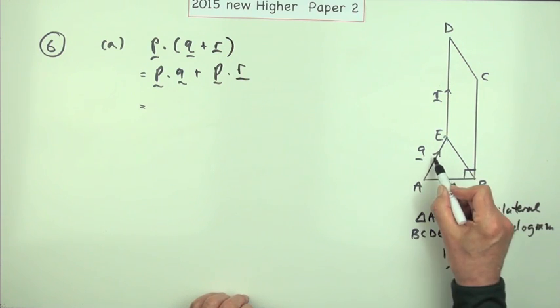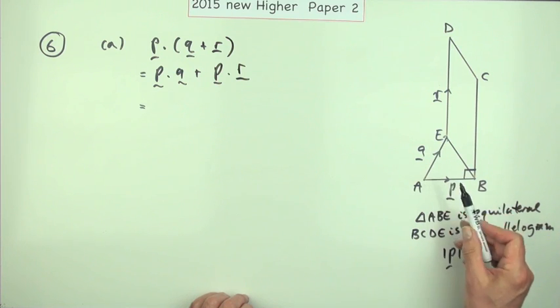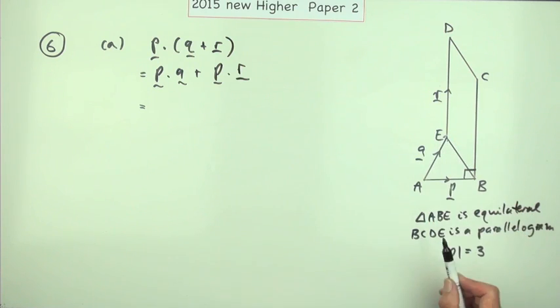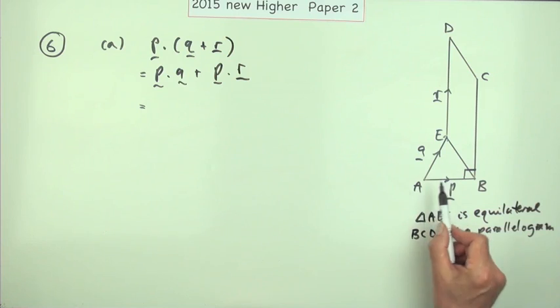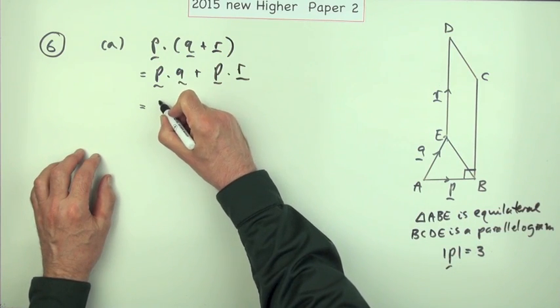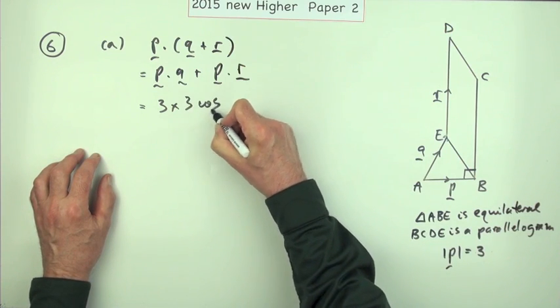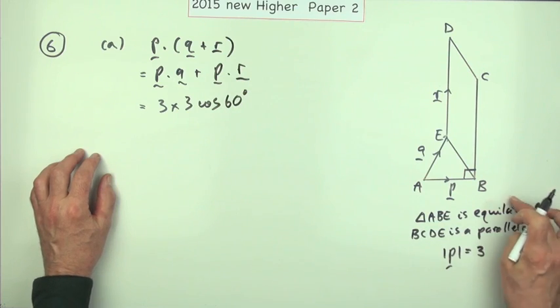So p dot q isn't just the length of q times the length of p, it's only that part of q that goes the same way as p, it's only that component there. So it's the length of p which is three, the length of q is also three, but the angle between them is 60 because it's an equilateral triangle.